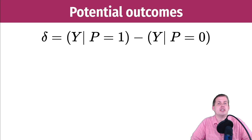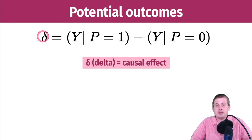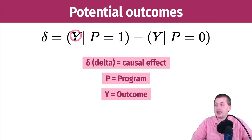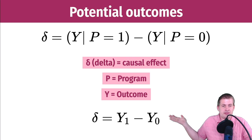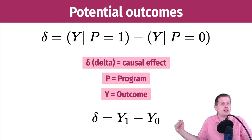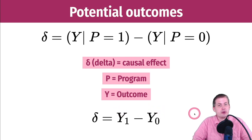We need to review the idea of potential outcomes, which we've talked about several times in this course. The idea with potential outcomes is you're trying to find the causal effect of a program — this delta — by finding the outcome for people who use the program and subtracting the outcome for people who don't. You can also write it as delta equals the outcome when the program is on minus the outcome when the program is off.